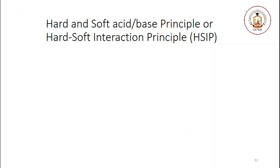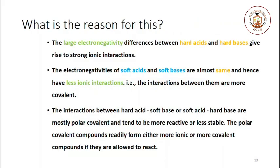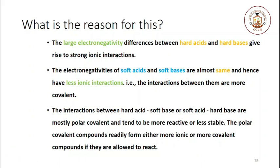The HSAB interaction principle states that hard acids prefer to interact with hard bases, while soft acids prefer to interact with soft bases. This is because the large electronegativity difference between hard acids and hard bases gives rise to strong ionic interaction. The electronegativities of soft acids and soft bases are almost the same, so their interactions are more covalent. Interactions between hard acids and soft bases, or soft acids and hard bases, are mostly polar covalent and tend to be less stable — such polar covalent compounds readily form either more ionic or more covalent compounds if allowed to react.